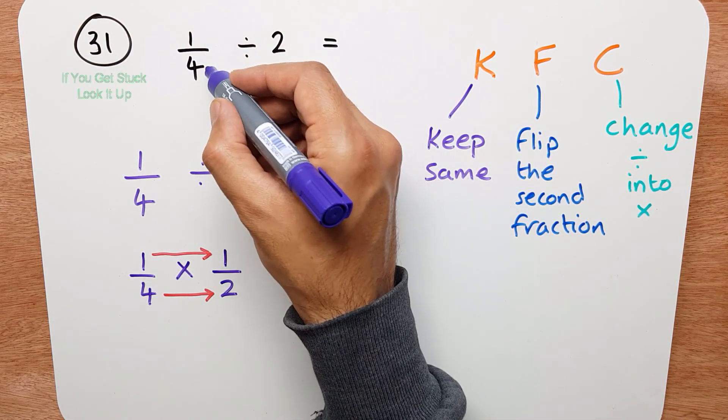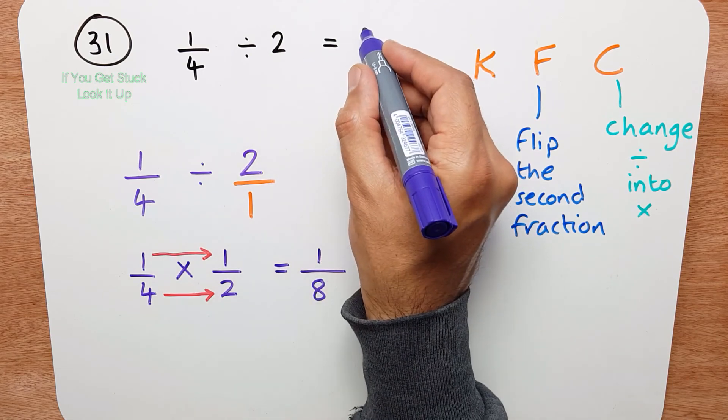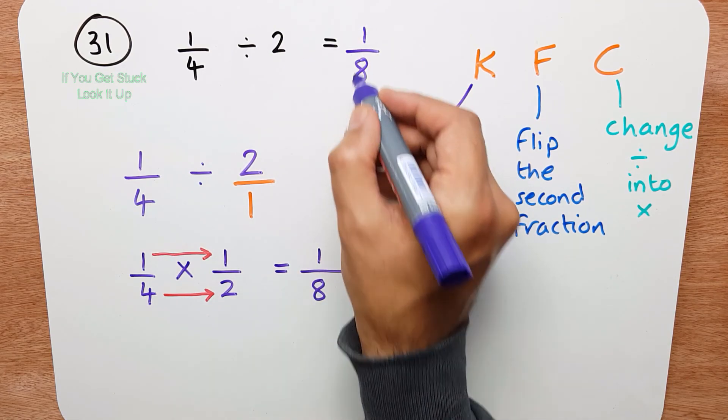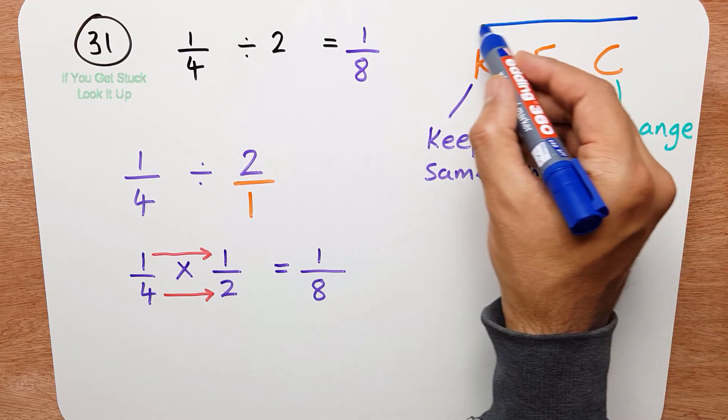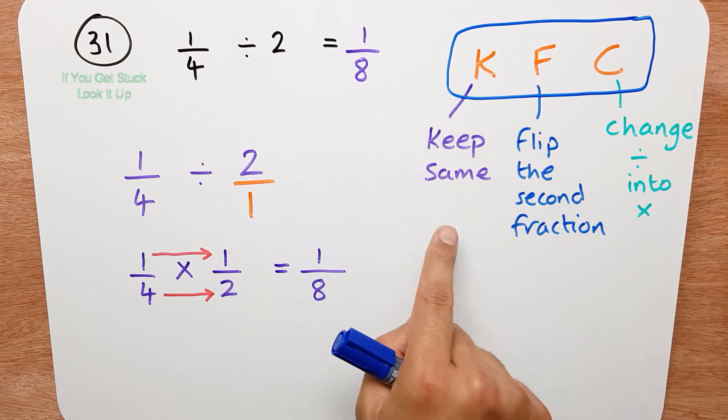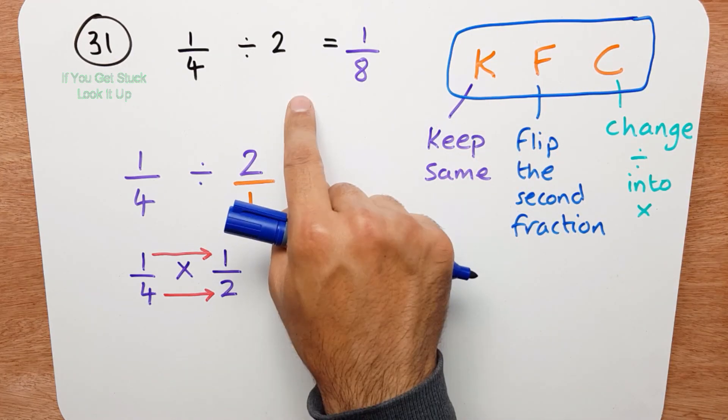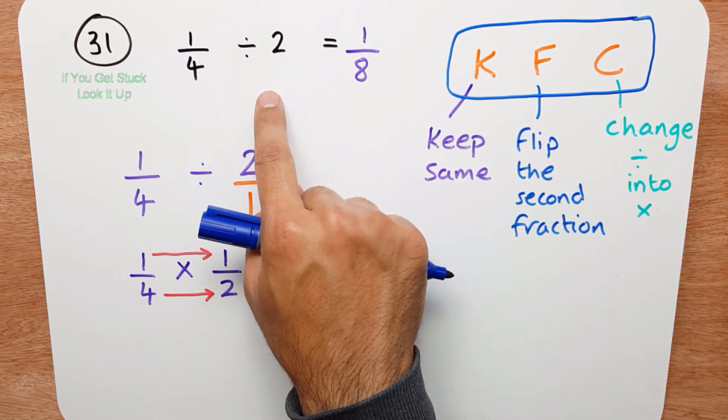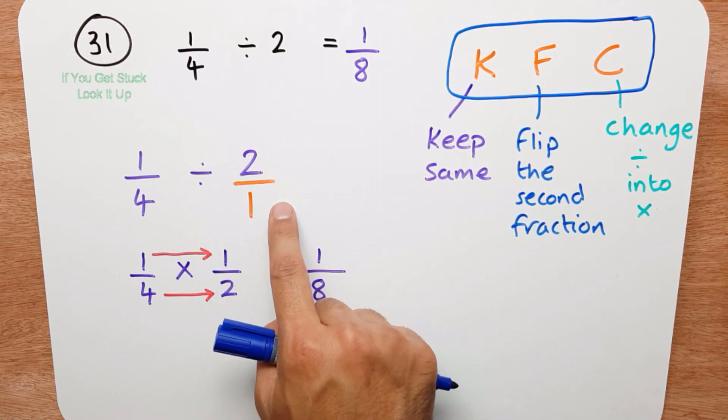So a quarter divided by 2 is 1 eighth. So if you can remember this trick here, it will help you do questions like this which look very tricky. But when you break them down, they're very easy.